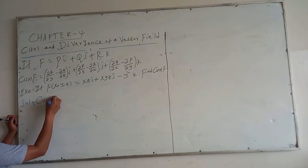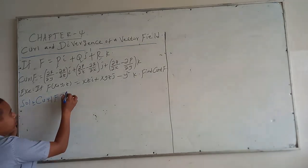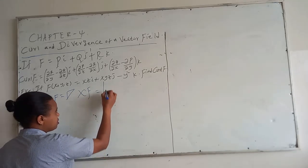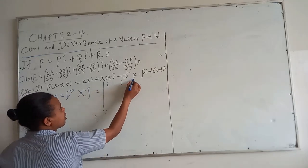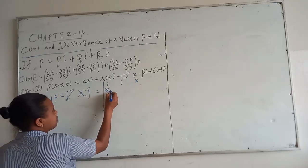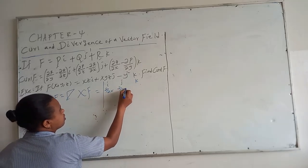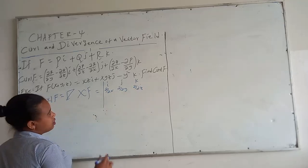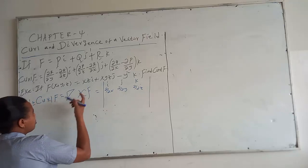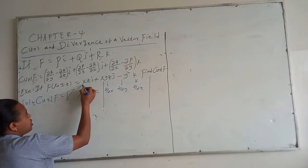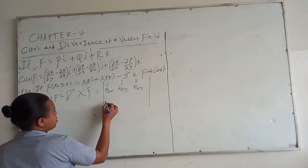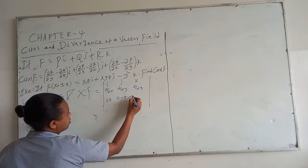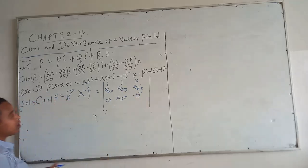The curl of F can be written as the gradient operator applied as a cross product. It is set up as a determinant with rows: i, j, k; then d/dx, d/dy, d/dz; then the components x, y, z of the vector field, including terms like −y² in k.